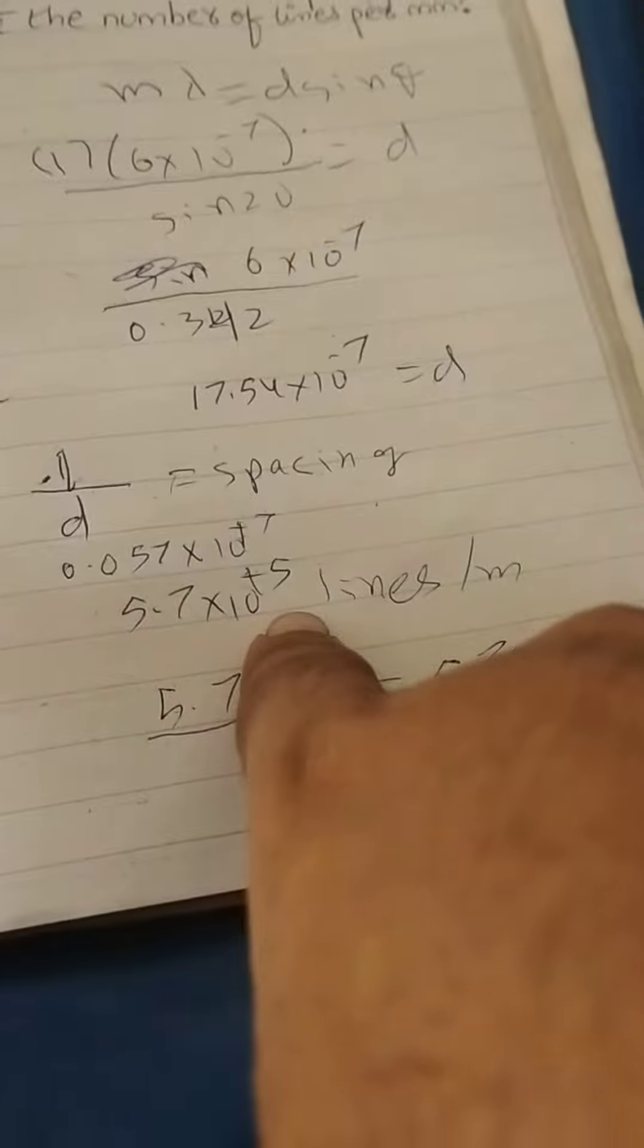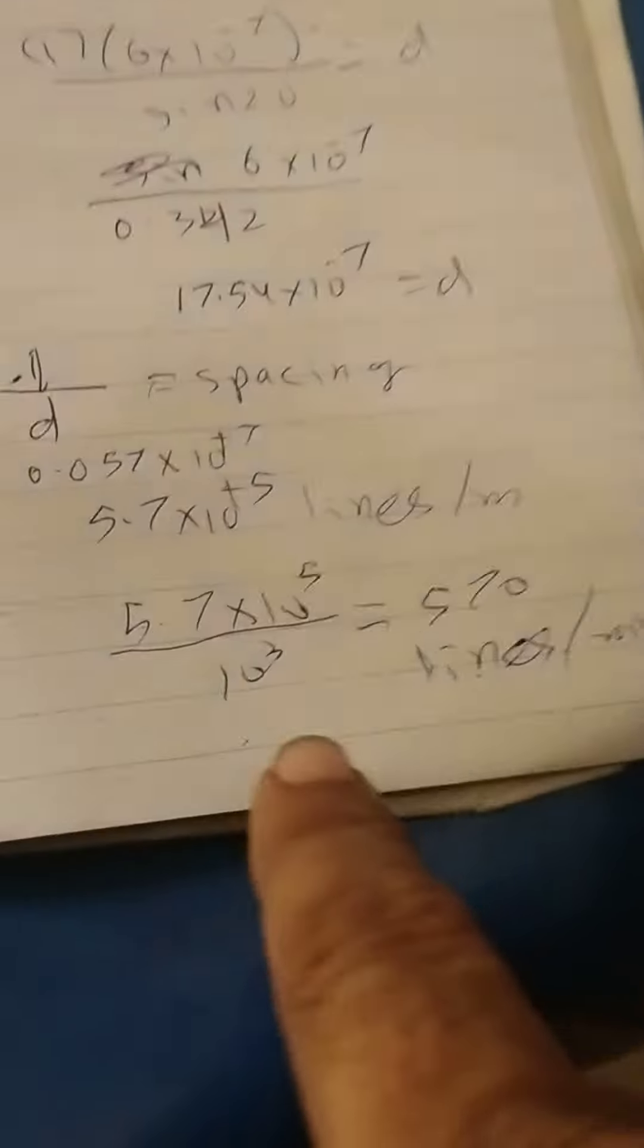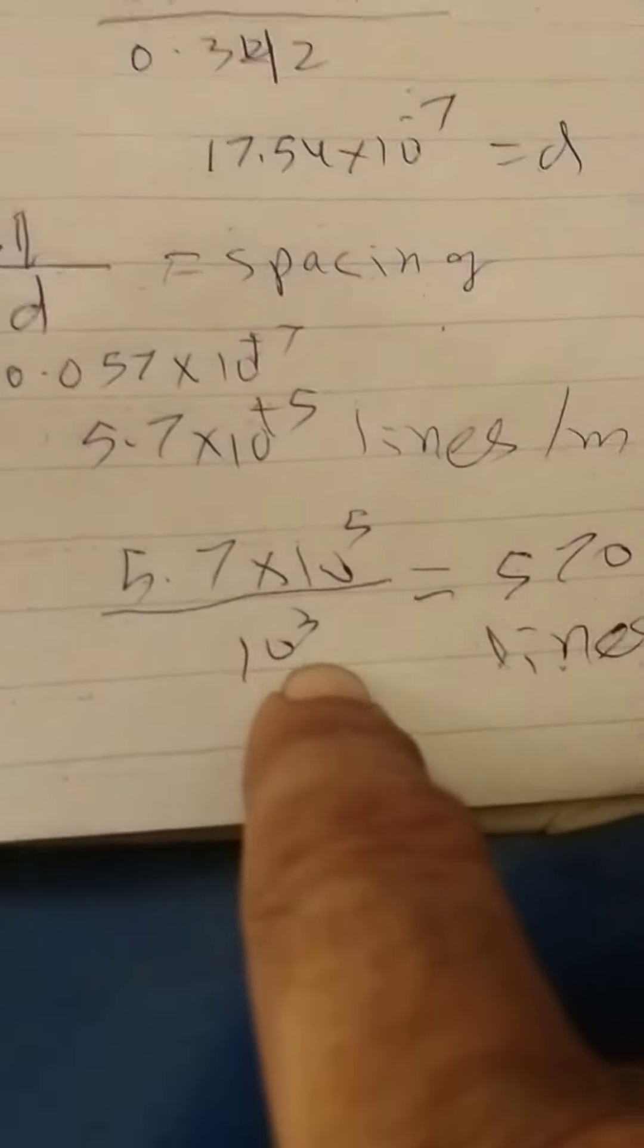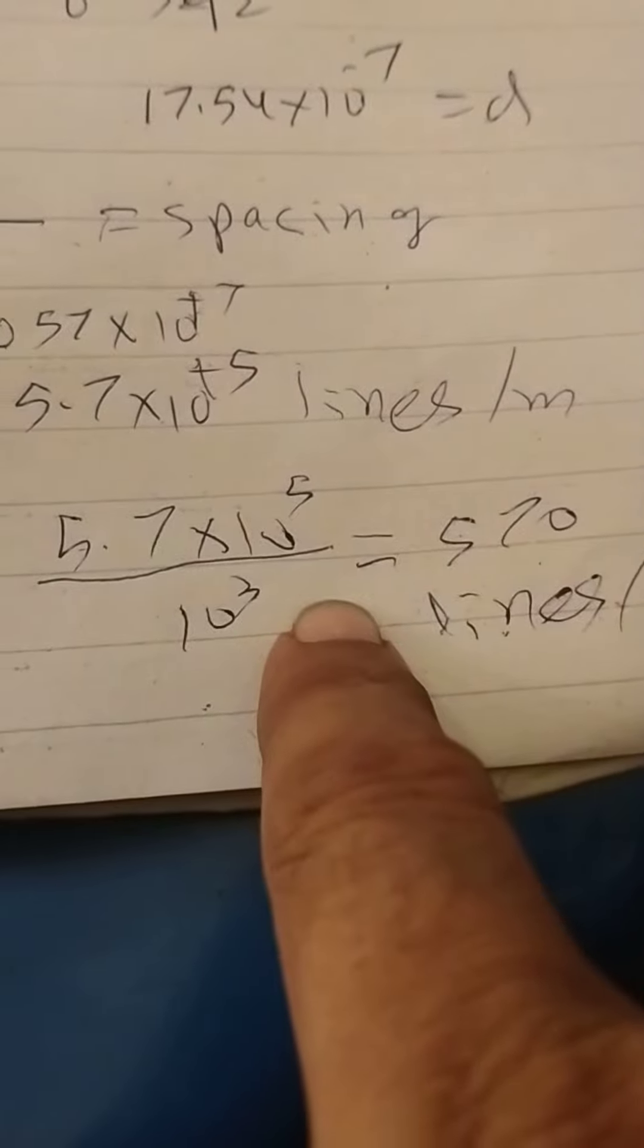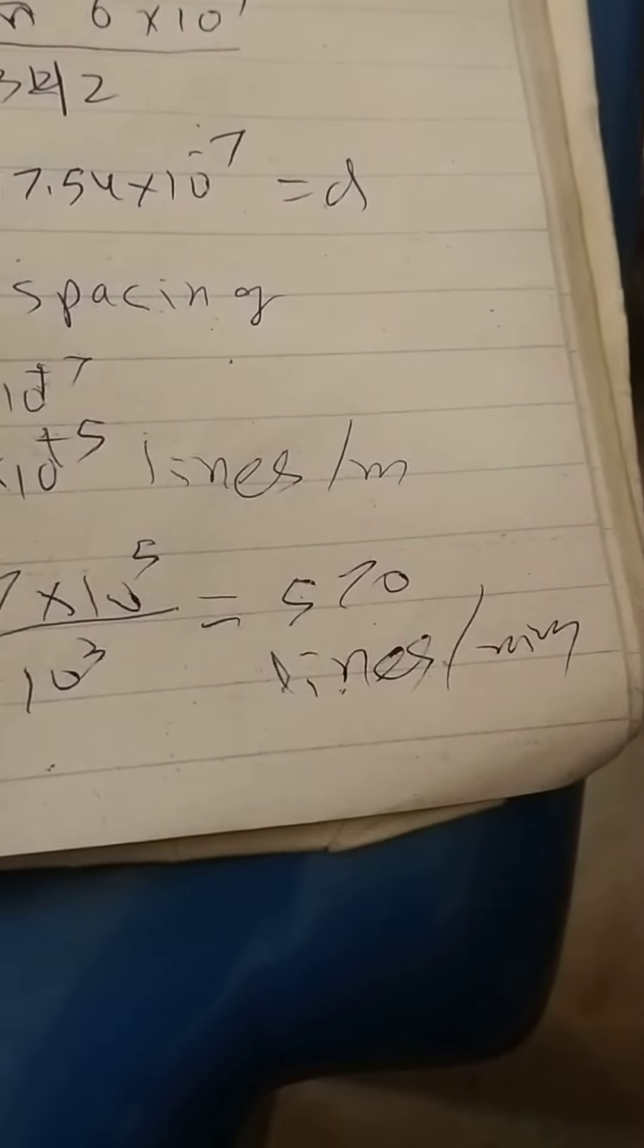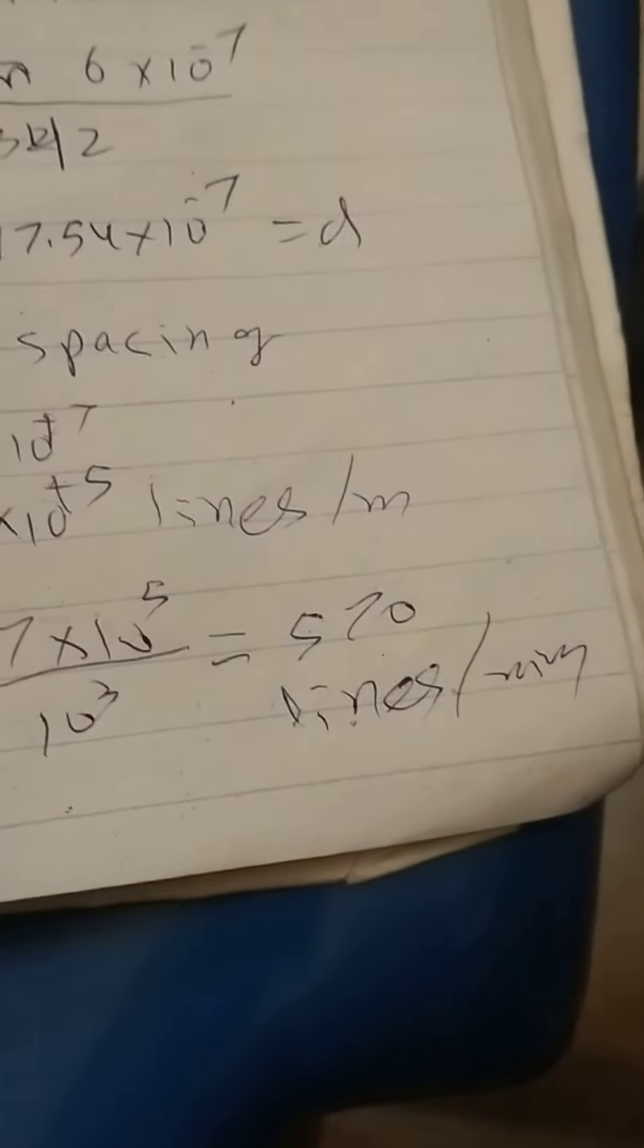Thik hai. Kitna aaya hai? 5.7 × 10^5 lines per meter. Ab calculate the number of lines per millimeter bhi nikalein. To bhai kaun sa mushkil hai? Millimeter chahiye. To 1 meter mein 10^3 hote hain. Divide karein. Answer ho jayega 570 lines per millimeter.